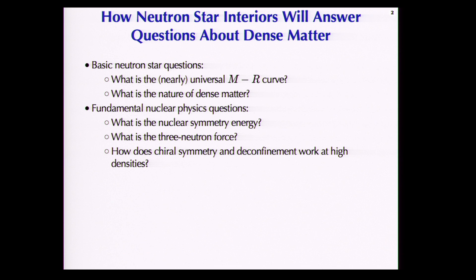Diving right in, there are some basic neutron star questions we're learning about. One is that there is a mass-radius curve and we'd like to know how big neutron stars are. Another question that comes up very frequently is: what is the nature of dense matter? These basic neutron star questions are connected to fundamental nuclear physics questions: what is the nucleon-nucleon interaction, what is the nuclear symmetry energy, what is the three-neutron force, and what is QCD at finite density and low temperature — in particular chiral symmetry and deconfinement.